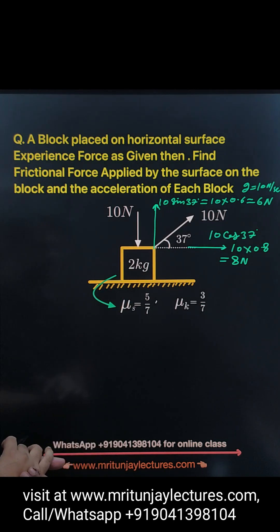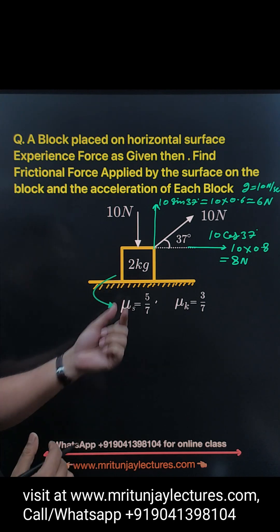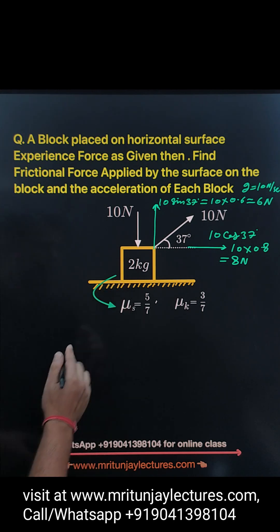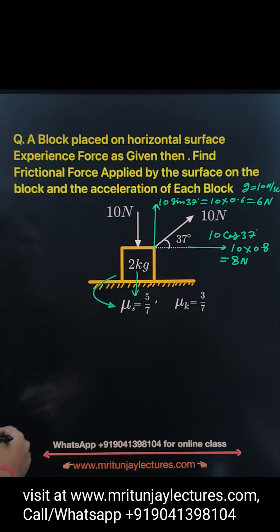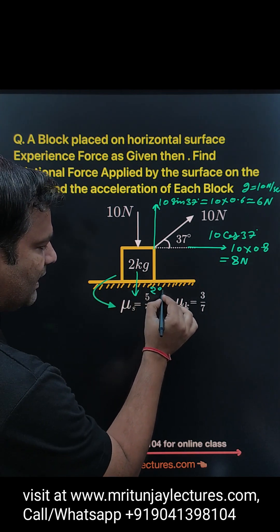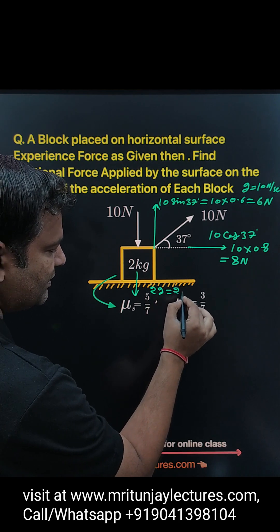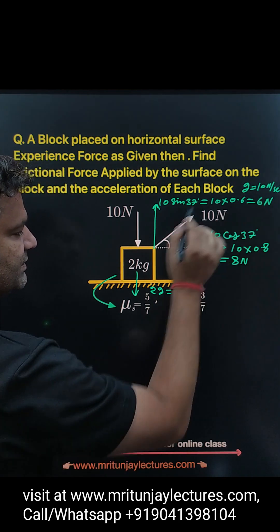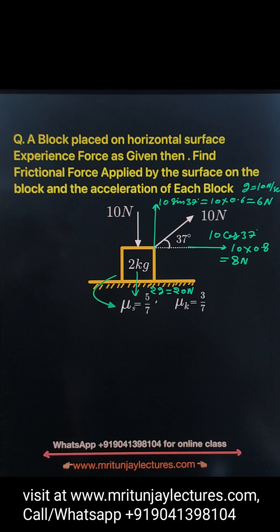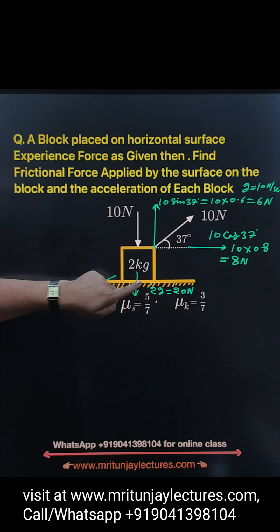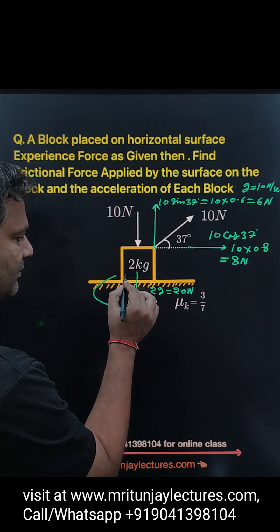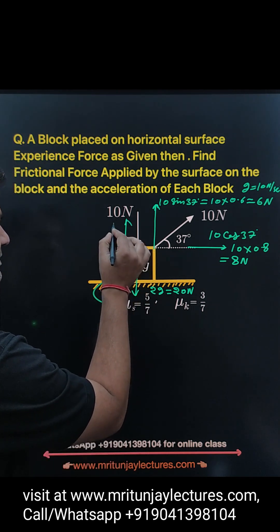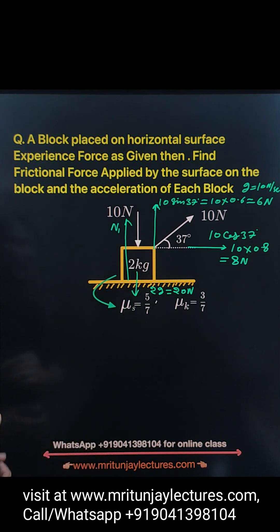Now, if you make a free body diagram, mg always acts in the downward direction. That is 2 into g, and g is 10, so that is 20 Newton. I have taken g equal to 10. The surface applies a normal force N1 on the block, always in the perpendicular direction.